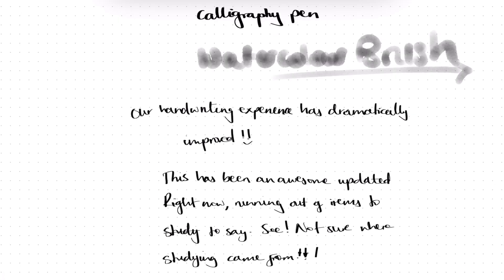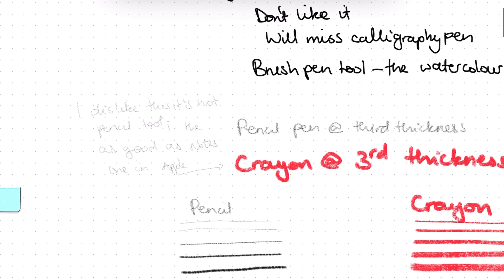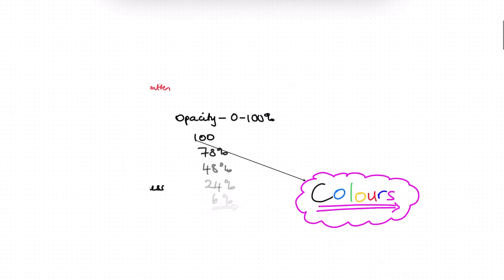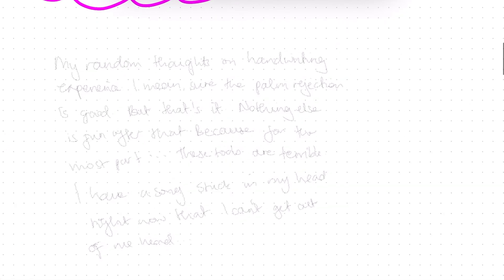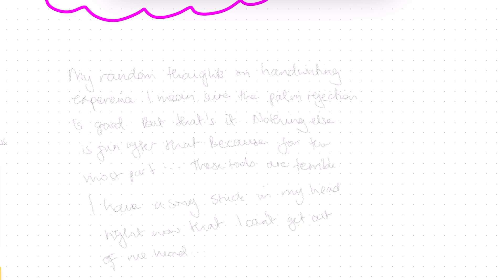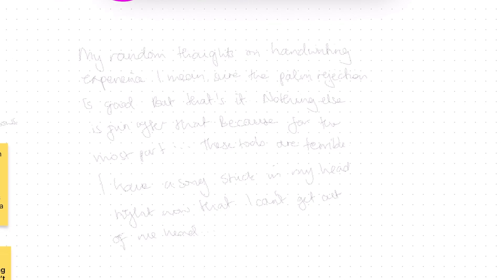We also now have a highlighter tool. Let's hope we'll get a highlighter for our text in the future. The notes written using the previous pencil tool are now dim, so they're now unusable. Updates should never change existing notes, and we hope this is just a bug that they will fix, and that it will not affect a lot of notes that we already had in the app.